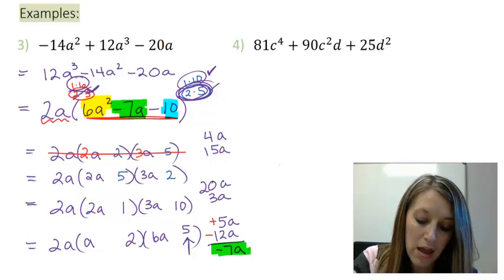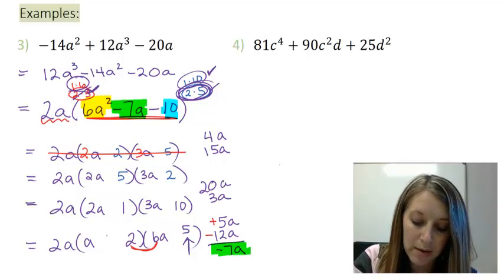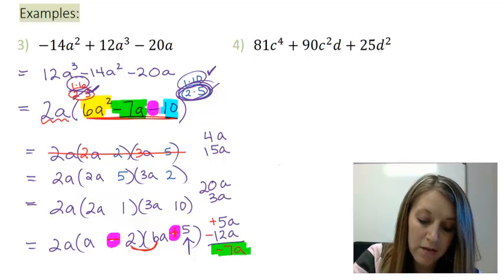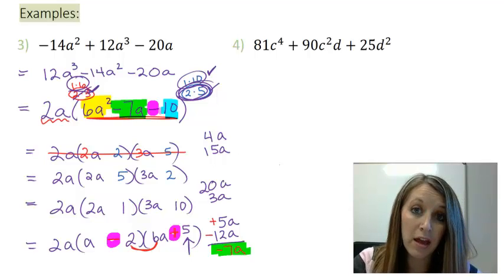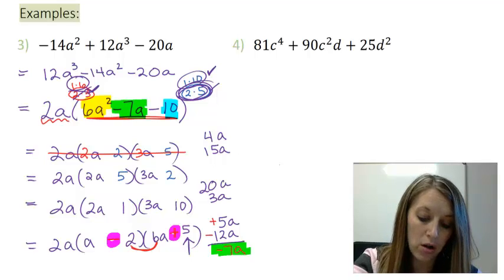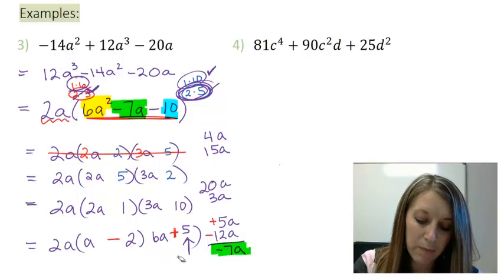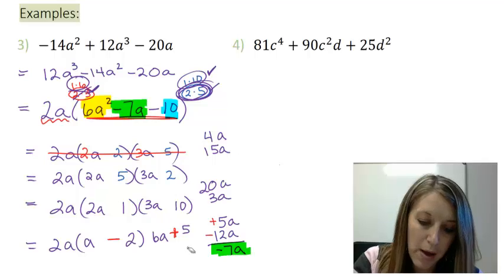So I find what gave me my 12, which is a 6 times 2, and make it negative. And I find what gave me my 5a, which is a 5 times a. So that gives me a positive there. Double check your last sign. Positive times negative does give me a negative. So that means everything should work out overall. So I have finally factored this guy completely. So I can box my answer and hand it in.